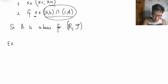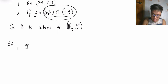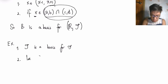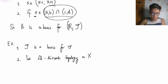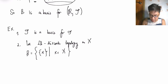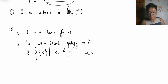Another example: tau itself is a basis for tau, meaning the topology generates itself — that's the trivial statement. Also, if D is the discrete topology on X, then the collection B of all singletons {x} for x in X is a basis for D, meaning the singletons alone can generate the entire discrete topology.